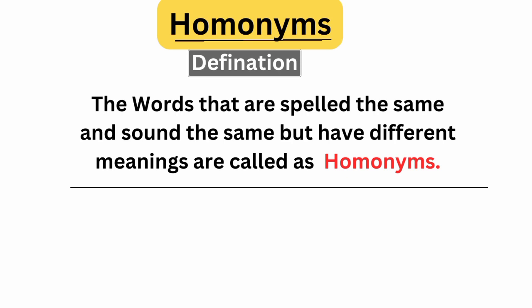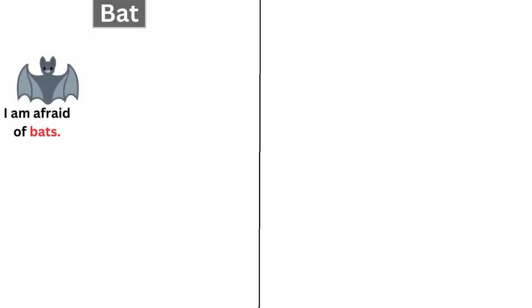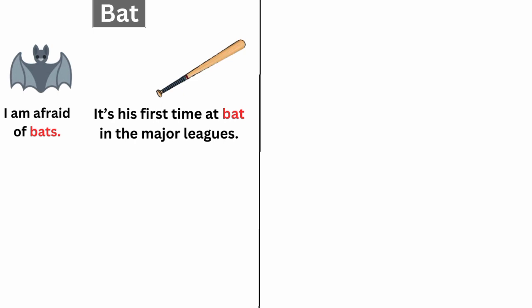Here are some examples of homonyms. Let's see. Now we have bat. Bat is a flying mammal. For example, I am afraid of bats. The other bat is a playing item. For example, it's his first time at bat in the major leagues.